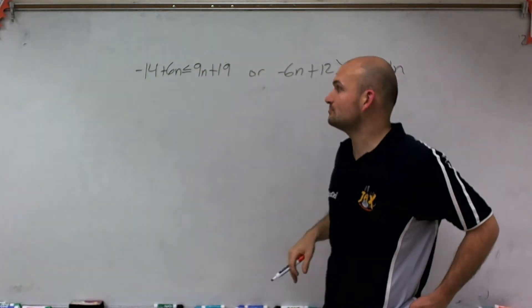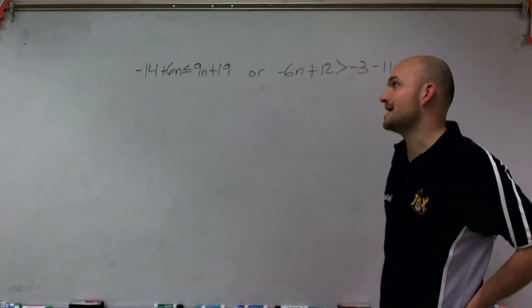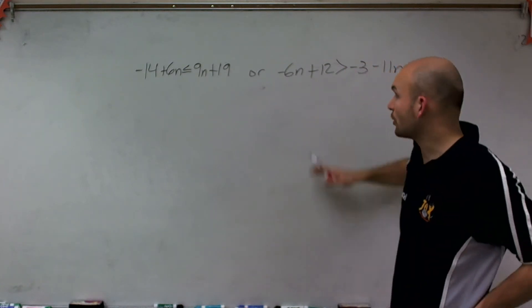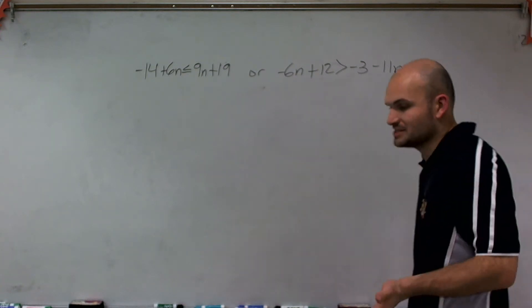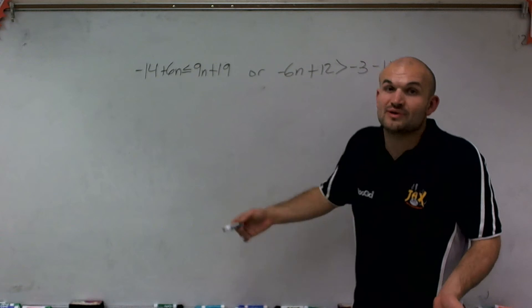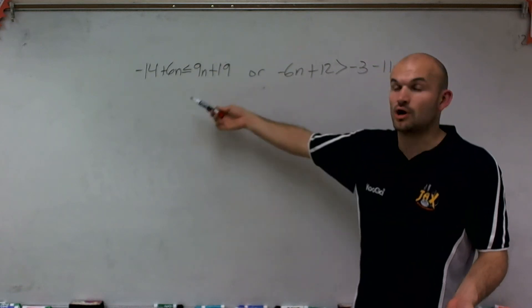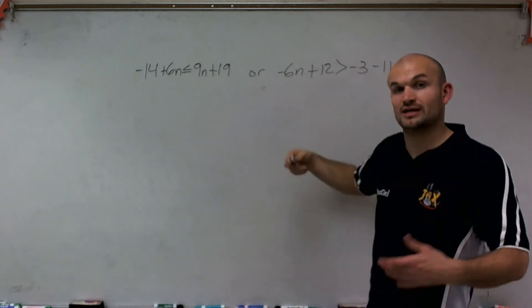So what I have is negative 14 plus 6n is less than or equal to 9n plus 19, or negative 6n plus 12 is greater than negative 3 minus 11n. So what it means when dealing with the or is it could be true for one inequality, or the other inequality, or really both.